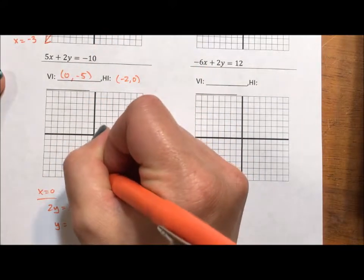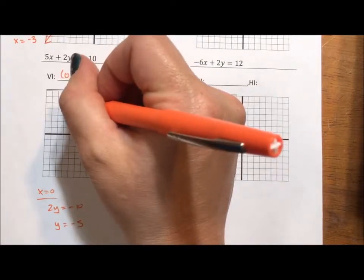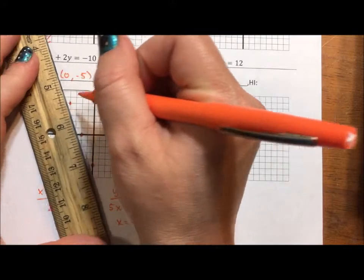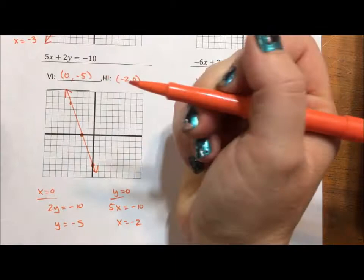Okay, 0, negative 5, 2, 4, 5, negative 2, 0. Instead of jumping up here and getting my other one, I'll just grab the 2. I know, I always do those extra points. I really like accuracy in my graphs.